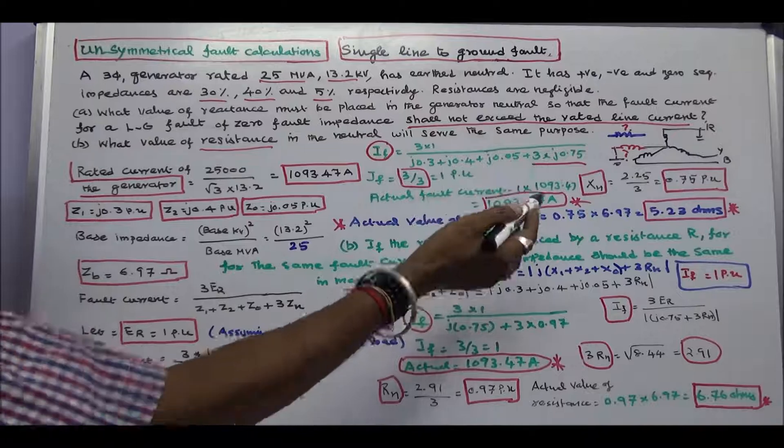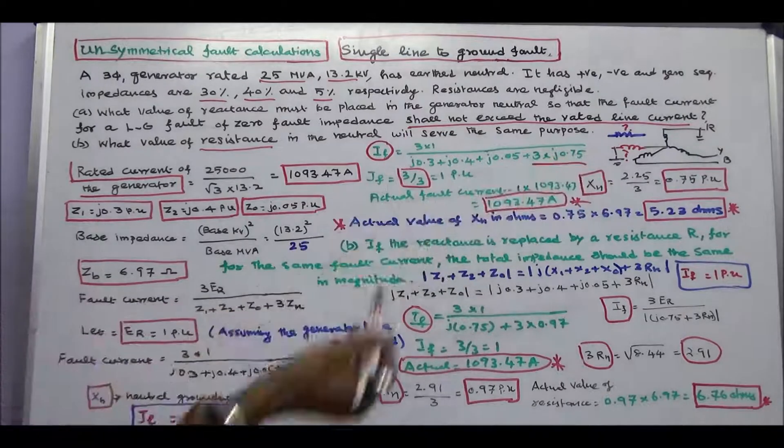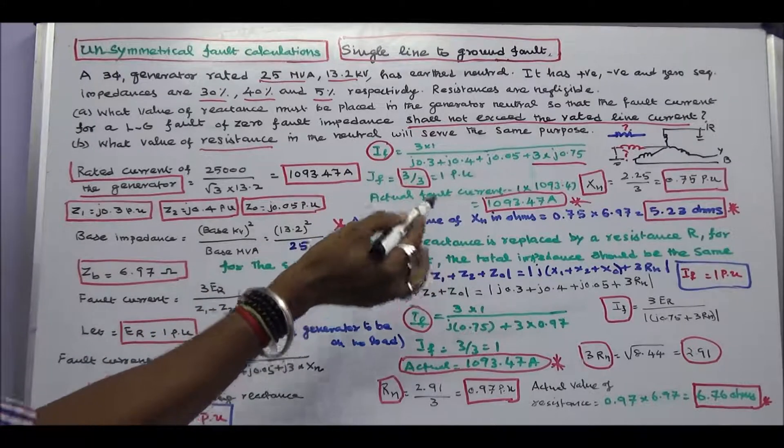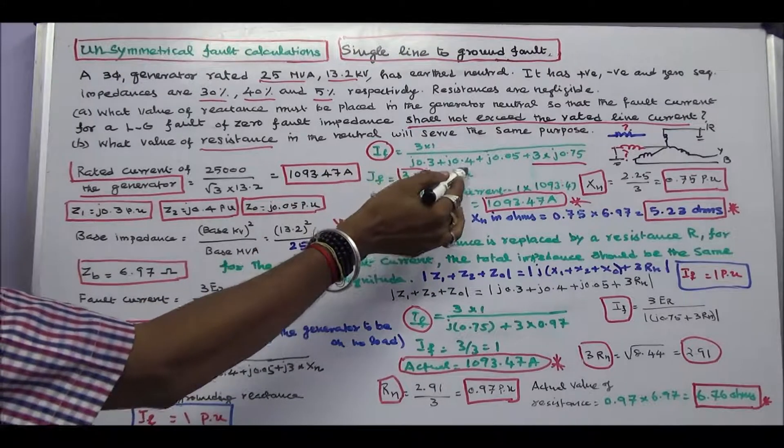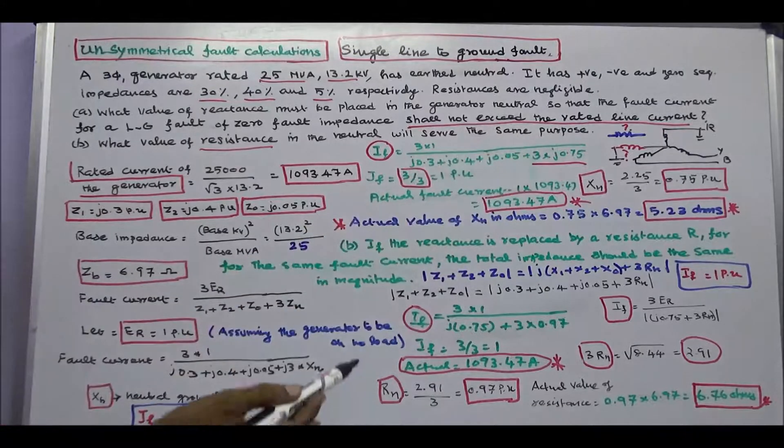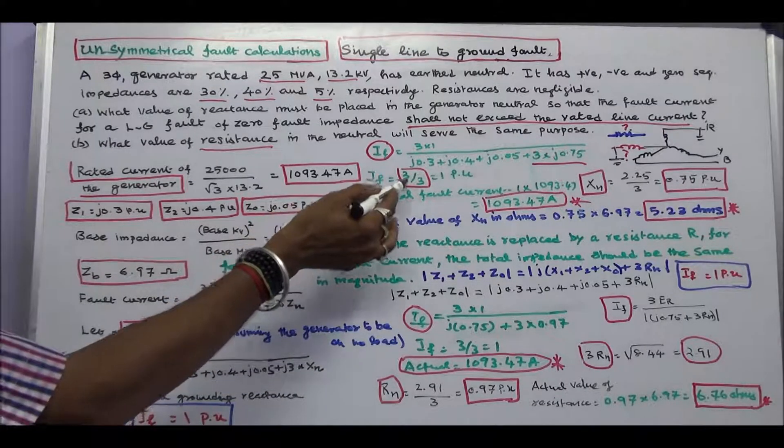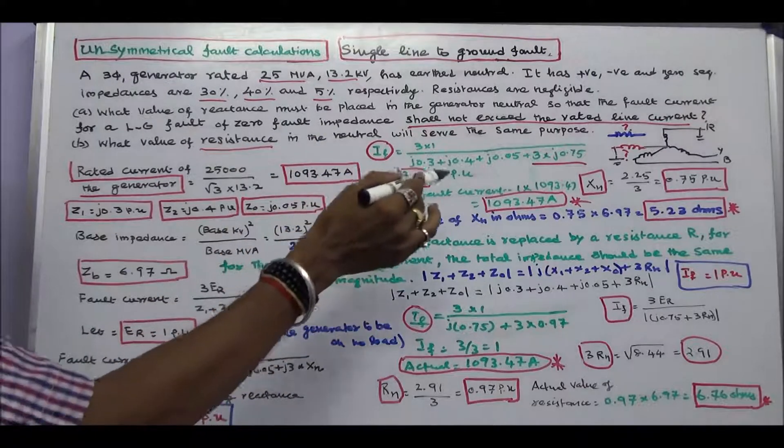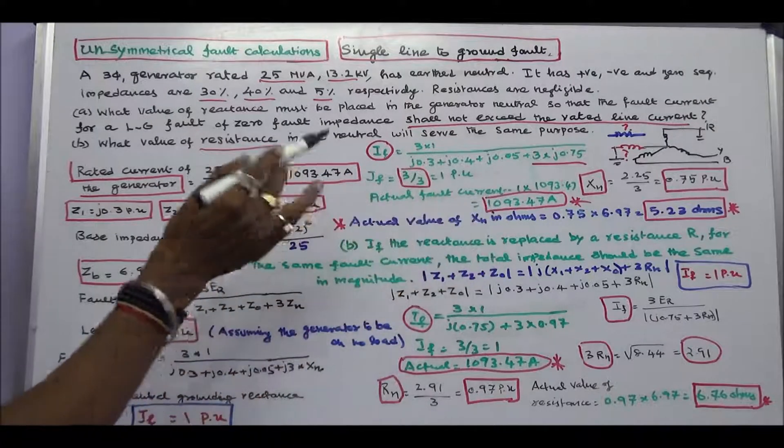Now we substitute the value Xn is equal to 0.75 in the equation. Fault current IF is equal to 3 into ER, 3 divided by j0.3 plus j0.4 plus j0.05 plus 3 into j0.75. So fault current is 3 by 3, that is equal to 1 per unit. Actual fault current is 1093.47 amperes.